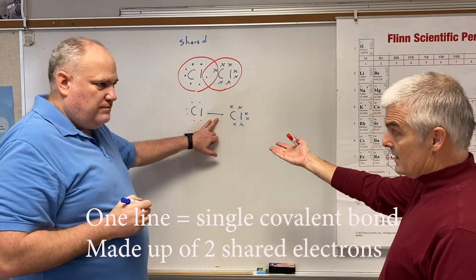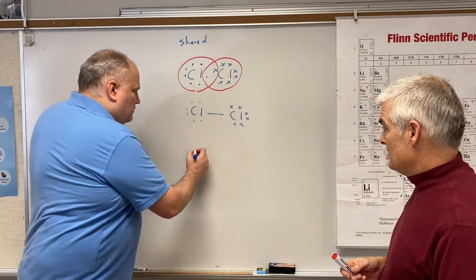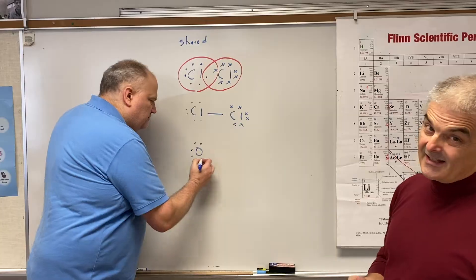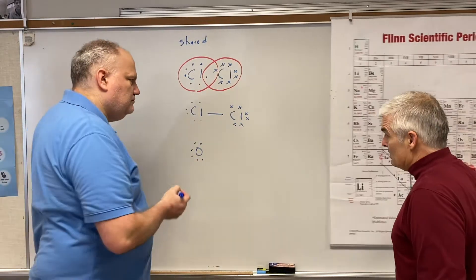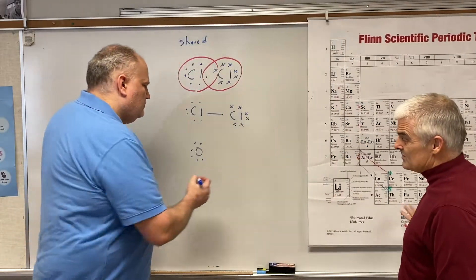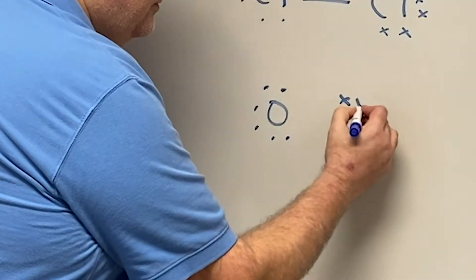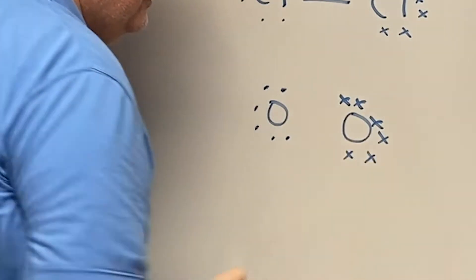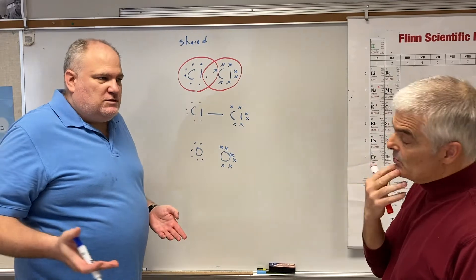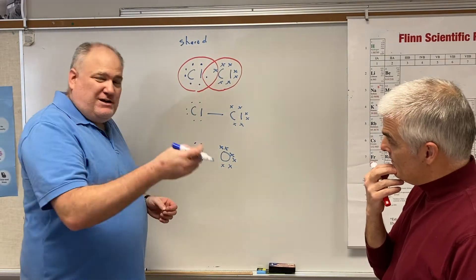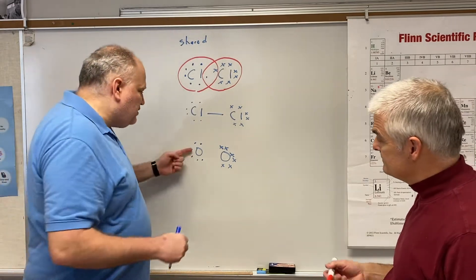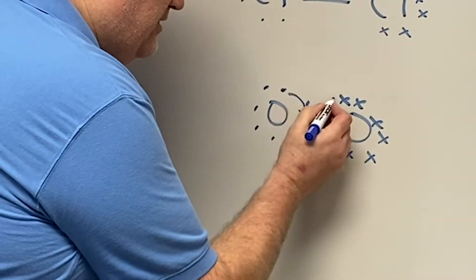Now let's look at a different example — oxygen. Oxygen is even farther from being happy because it only has six electrons; it's in column 16. He's really unhappy. But we can put him next to another oxygen who also has six. How are we going to make them happy? They both need two more. Here's the key principle: every time I share something with you, I'm actually getting something back.